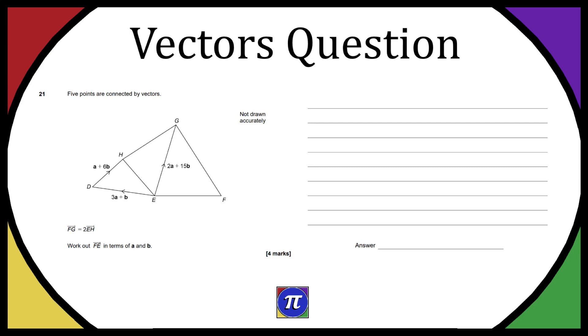So question 21 is a vectors question. It's going to be part of the past paper listed down below and also part of a playlist on my channel. So let's start reading question 21, see what they give us and what we have to work out. So for question 21, it says five points are connected by vectors and we have D, H, E.